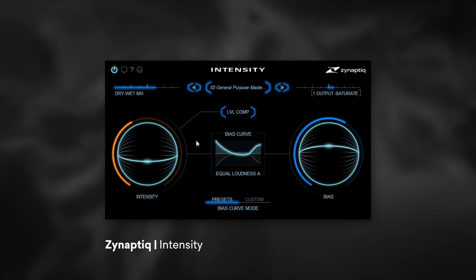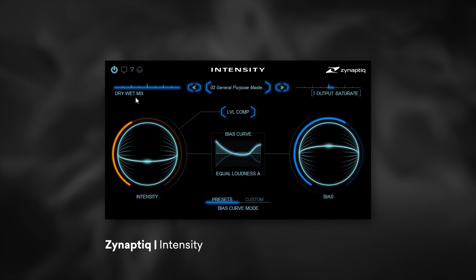First of all, we've got a dry/wet slider right here. You just click and drag up and down. If you hold down Shift it will go slower. If you Control-click it will go back to the default, and that's the same thing with right-clicking on PC — it will go back to the default as well.